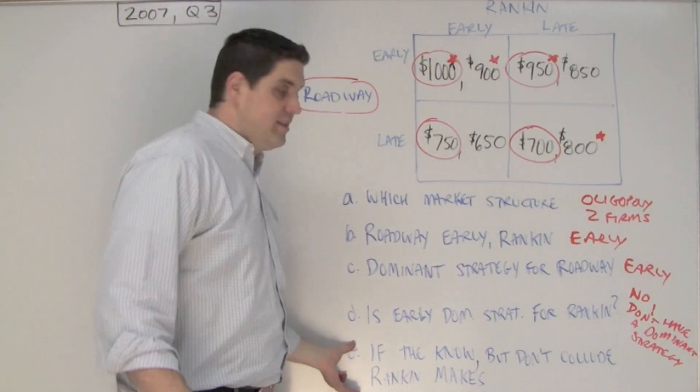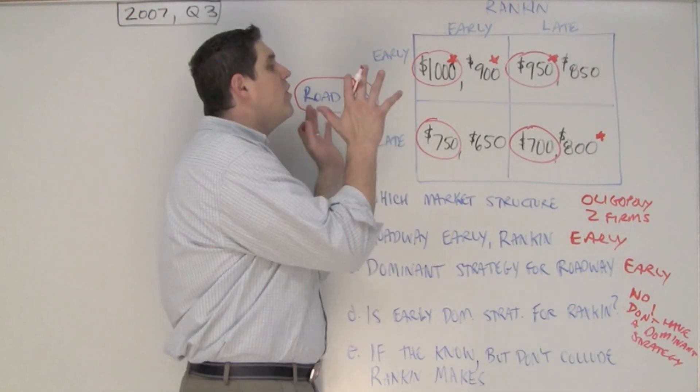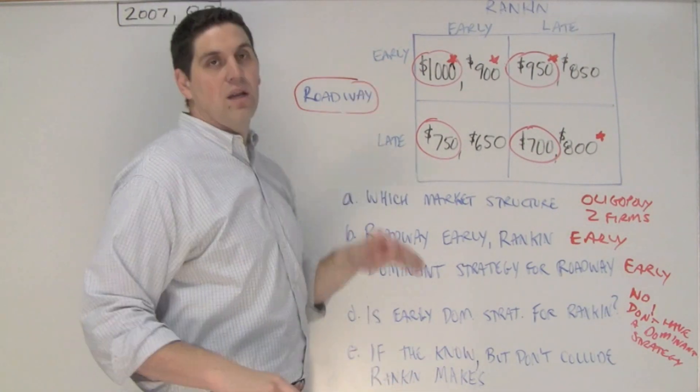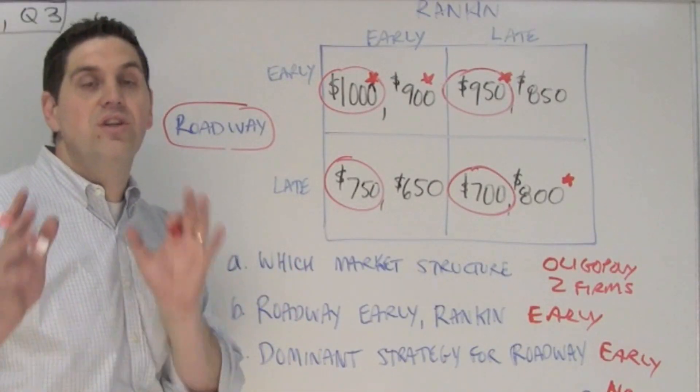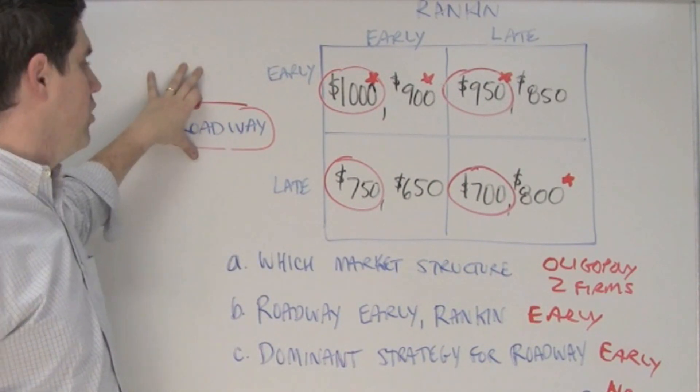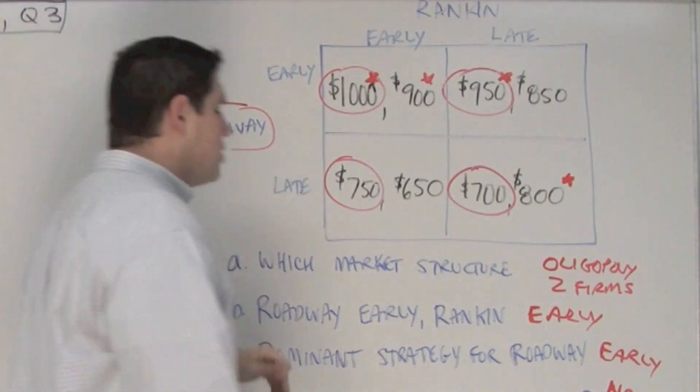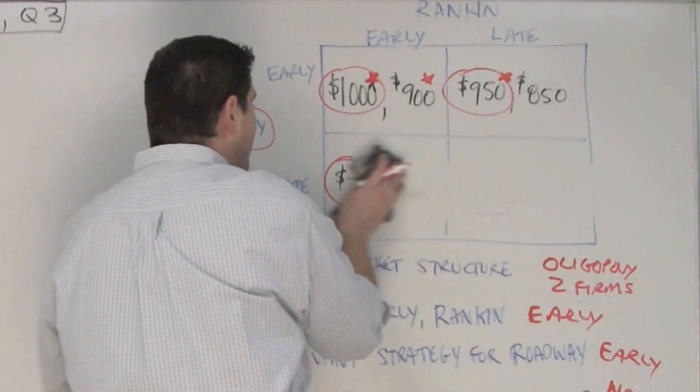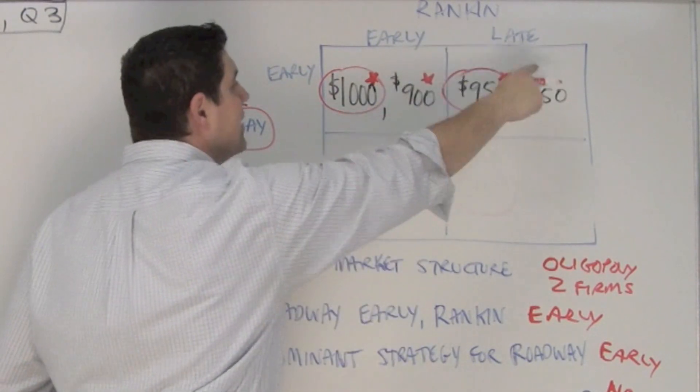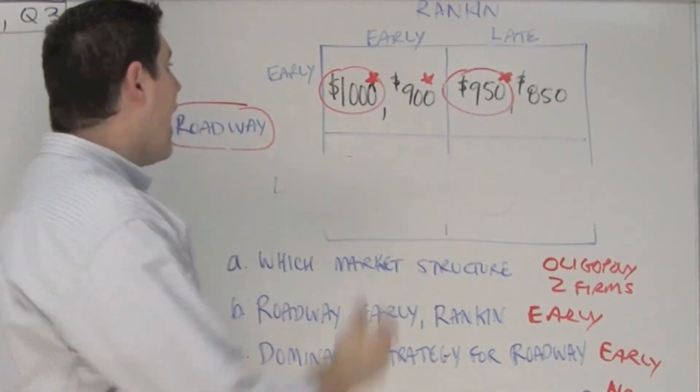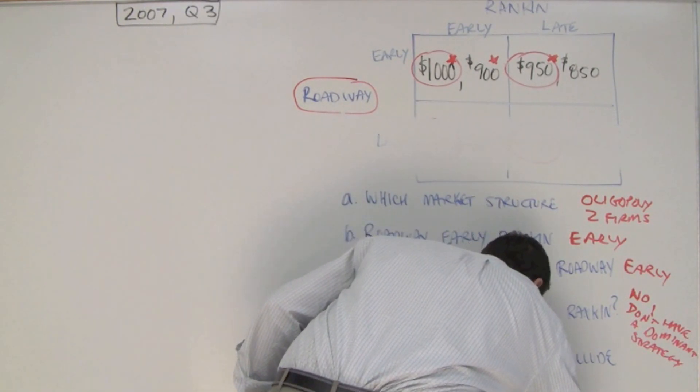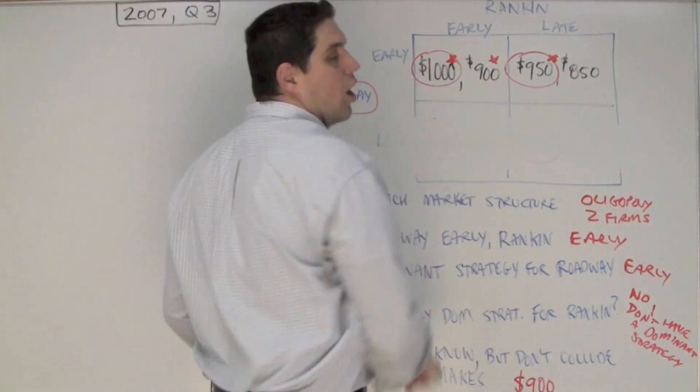Now, the last question says, if both firms know the information on this matrix, but they don't collude, how much profit is Rankin going to make? They don't need to collude to know what each other are going to do. We know for a fact exactly what Roadway is going to do. There's no reason for them ever to go late, and so this bottom half is just not going to happen. So now, Rankin has a choice between either going early and getting 900, or going late and getting 850. Well, they'd rather have 900, and so the right answer is $900, because they'll both go early.